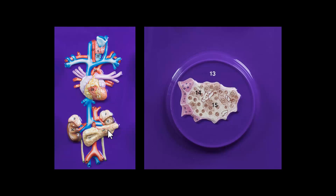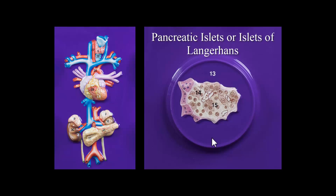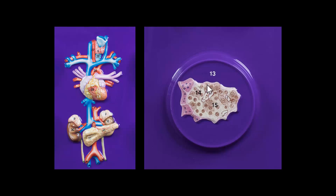Now we move down to this gland right here, and that is the pancreas. The pancreas — you get two glands for your money: it's endocrine and it is exocrine. It's going to make a whole lot of digestive enzymes, but that is not the focus of this lecture. For now we're going to look at the endocrine function. Under the microscope you'll find these little islands of cells called pancreatic islets, or the islets of Langerhans — islet means island. These little darker cells here are going to be the alpha cells of the pancreas, and the lighter cells here are going to be the beta cells.